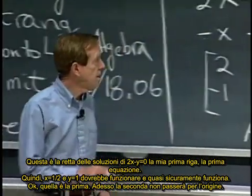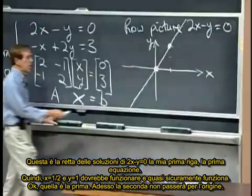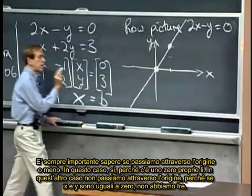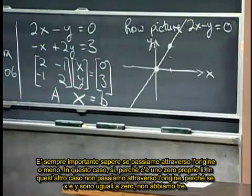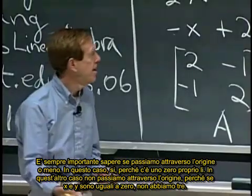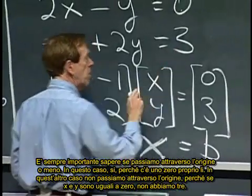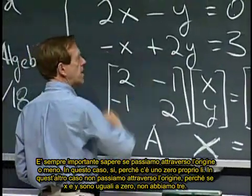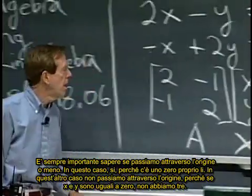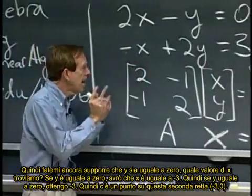Okay, that's the first one. Now the second one is not going to go through the origin. It's always important, do we go through the origin or not? In this case, yes, because there's a zero over there. In this case, we don't go through the origin because if x and y are zero, we don't get three.